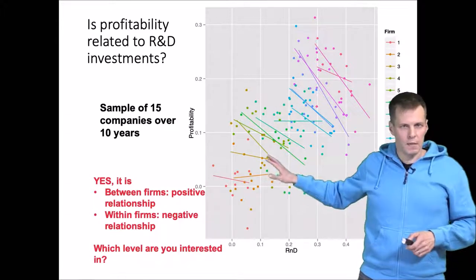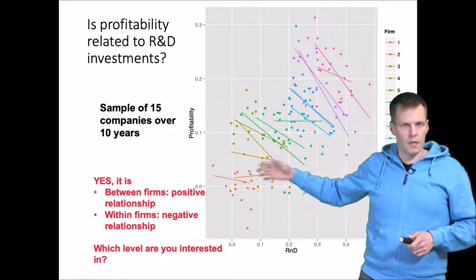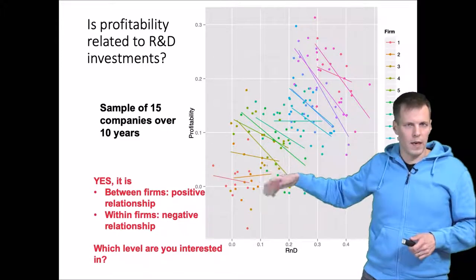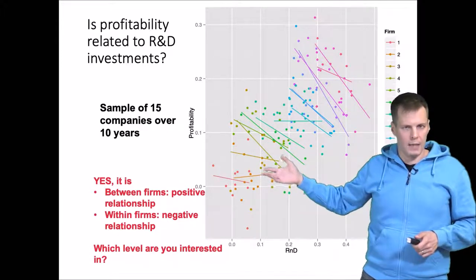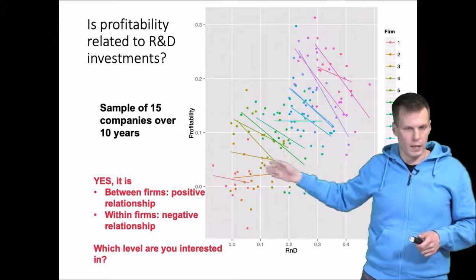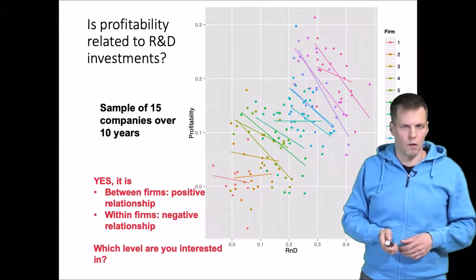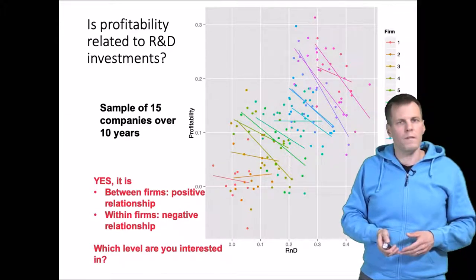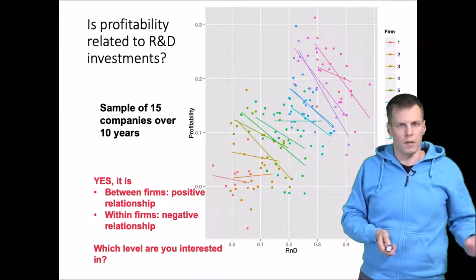From this example, it's clear that just running a regression on this data and reporting that effect as if it was the within effect would lead us to an incorrect conclusion. There are two different fallacies related to this example.